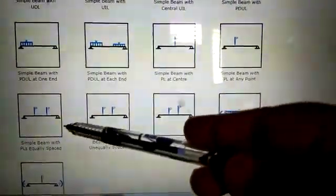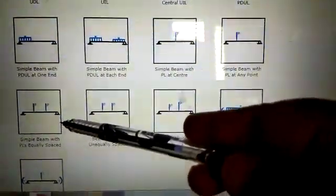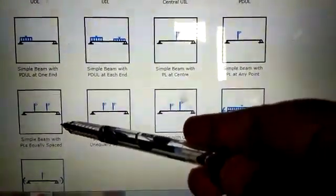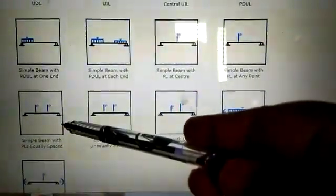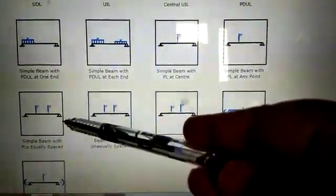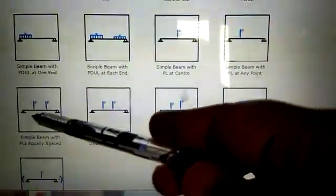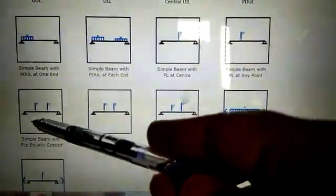This is the next case of loading. Here, we have seen that two point loads are applied on a simply supported beam at some distance from the support.